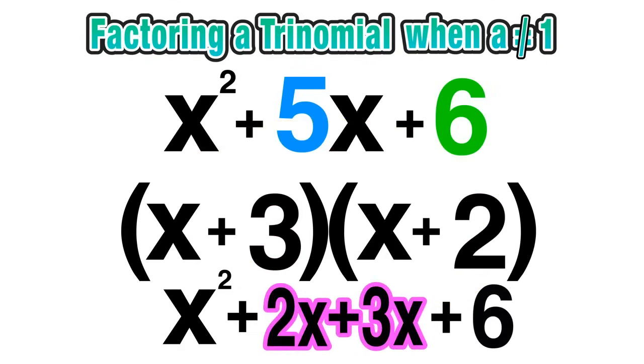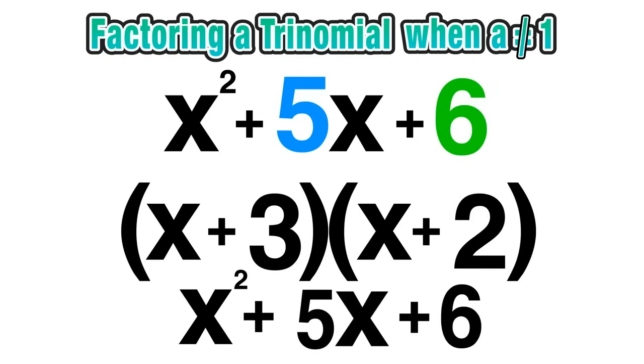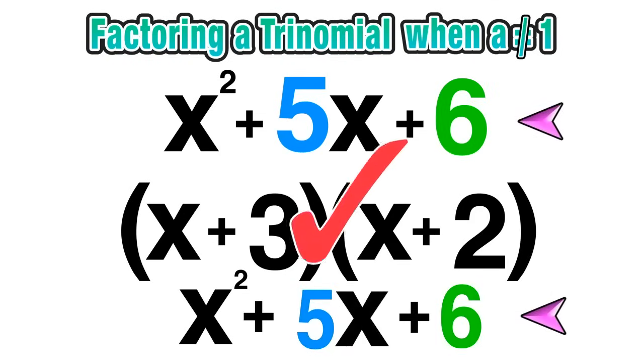Then we notice that 2x and 3x, the terms in the middle, are like terms so we can combine them. 2x plus 3x equals 5x, and we notice that the trinomial we started with is the same as the one we finished with, and we know our factors are correct.